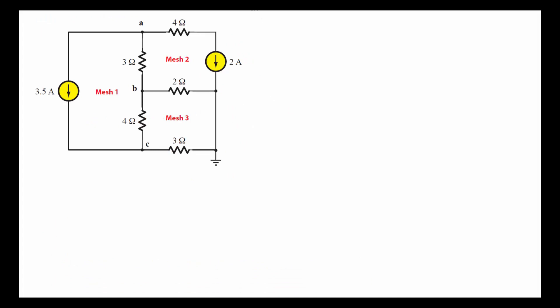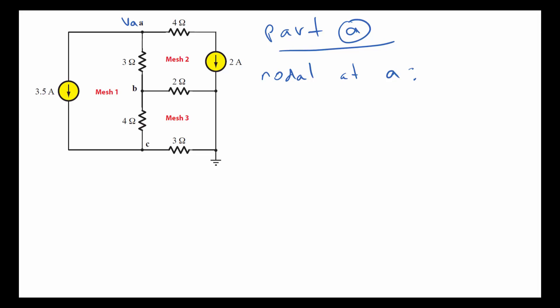So now this is part A. Let's do the node equations for node A — nodal at A. When we do node voltage analysis, we assume that the node we're operating on has the highest voltage in the circuit, and that the currents flow outwards from it. So we're assuming that the currents are flowing out from that node in every direction. Now let's write the node equation with that understanding.